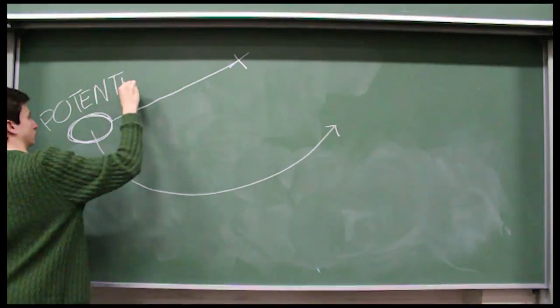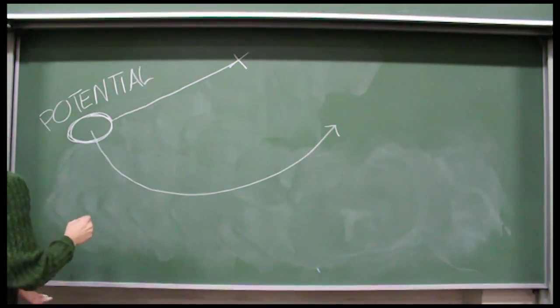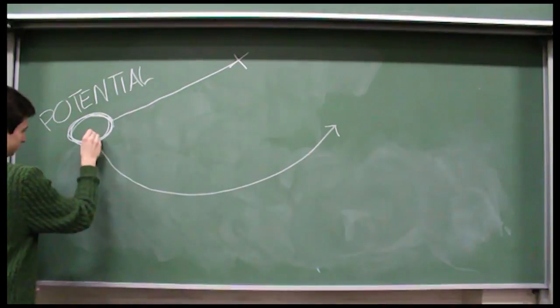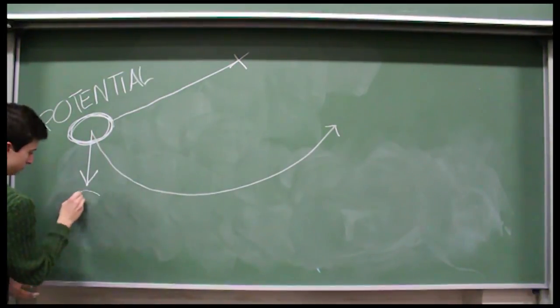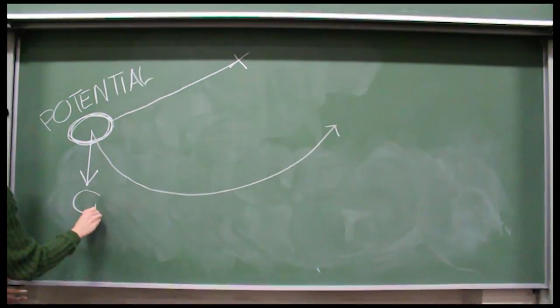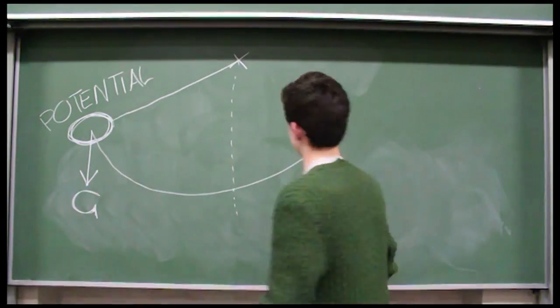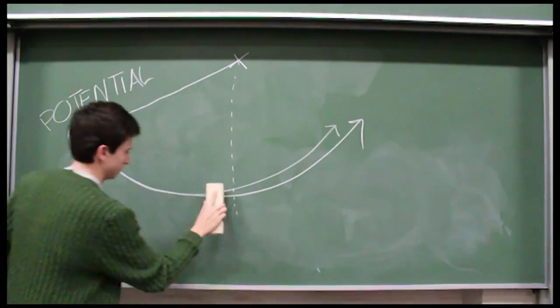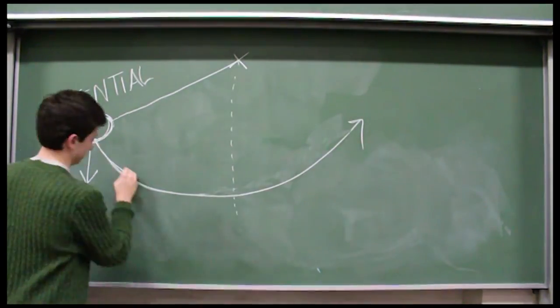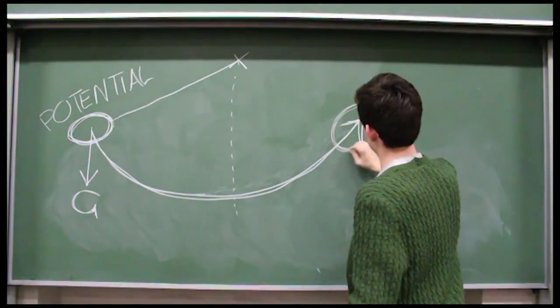This is because if I let go, gravity would convert the potential energy into kinetic energy, which is exactly what happened. The weight also holds completely potential energy when it reaches the highest point on the opposite side from where I let go.